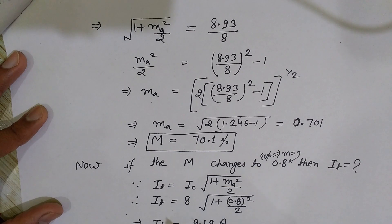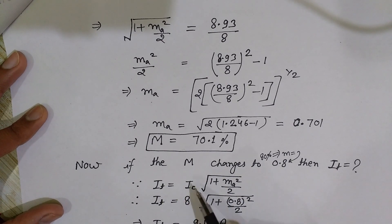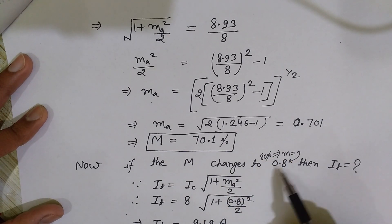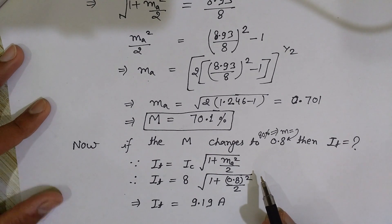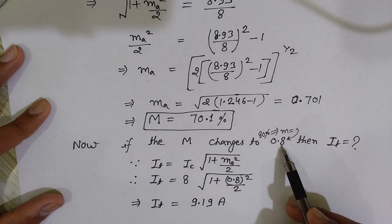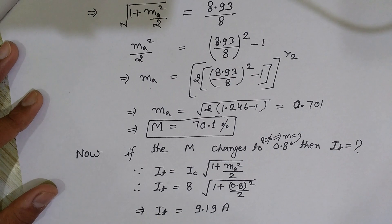Now for Part 2: if the percent modulation changes to 80%, what will be the total antenna current? I use the same formula. I_C is still 8 amperes. The modulation index ma = 80 / 100 = 0.8. So I_T = 8 × √(1 + 0.8² / 2). Solving this gives a total antenna current of 9.19 amperes. This was a very interesting problem related to antenna current in amplitude modulation.